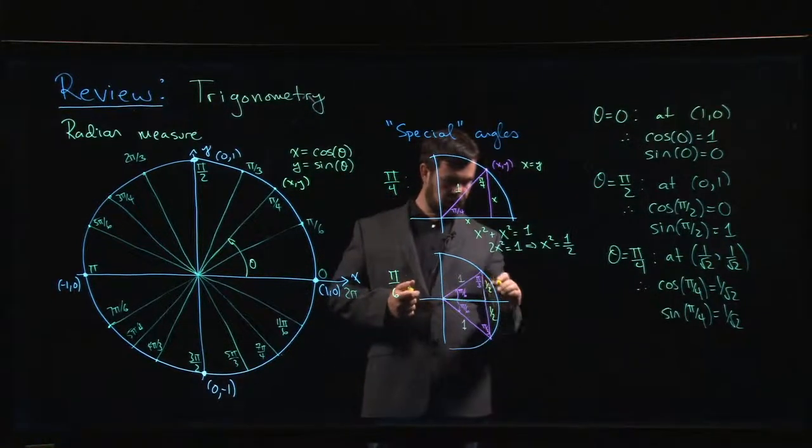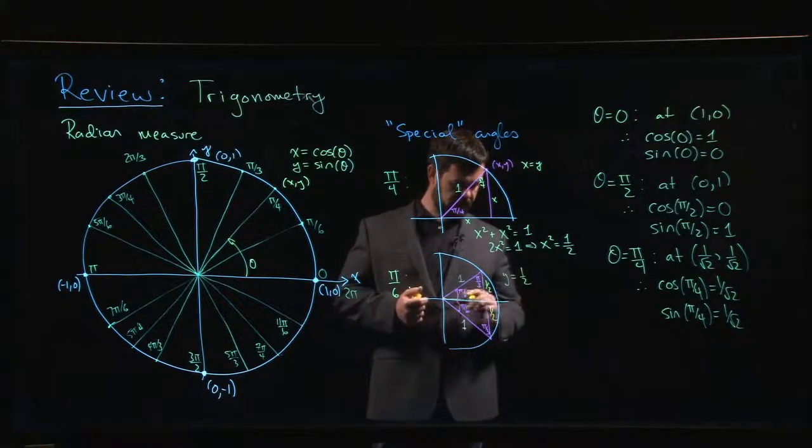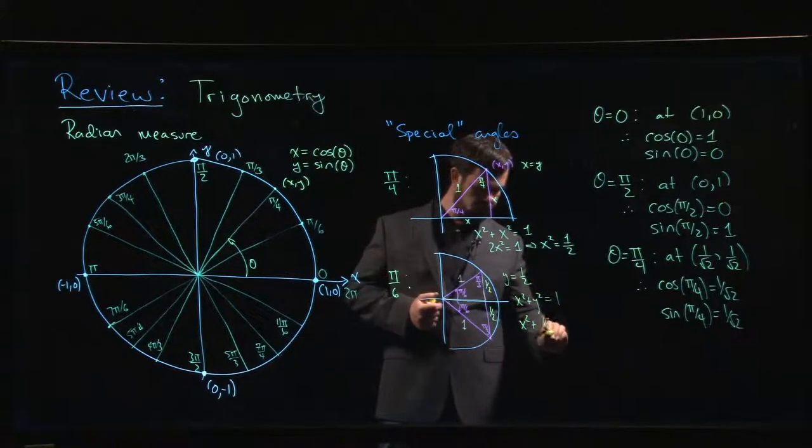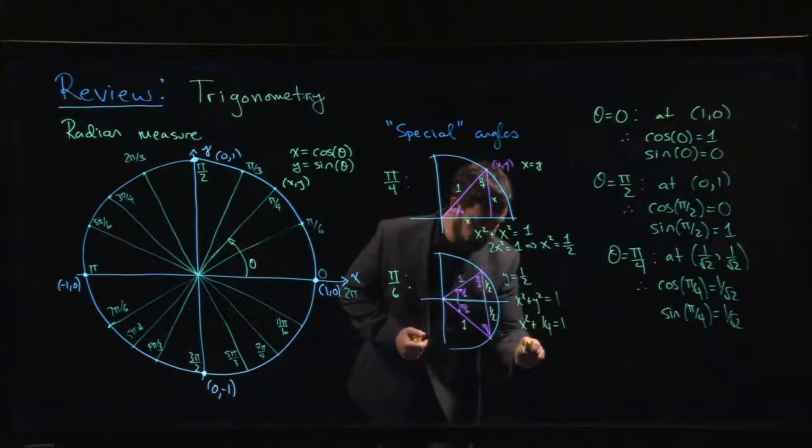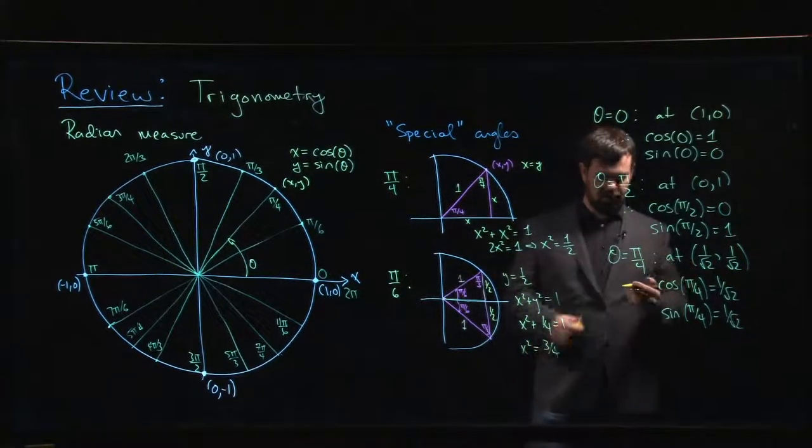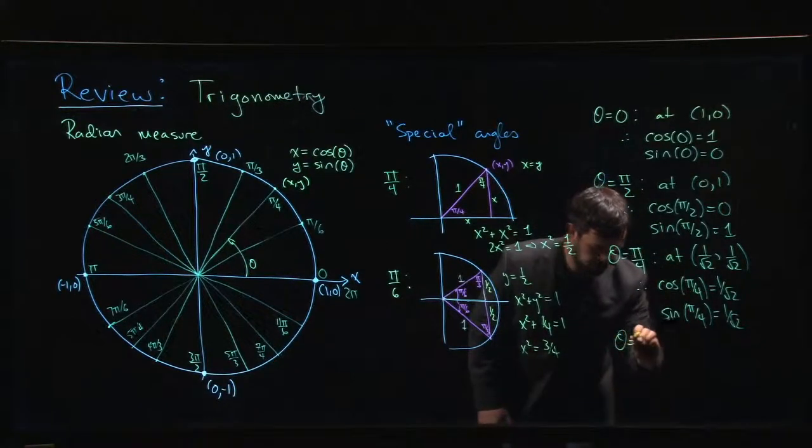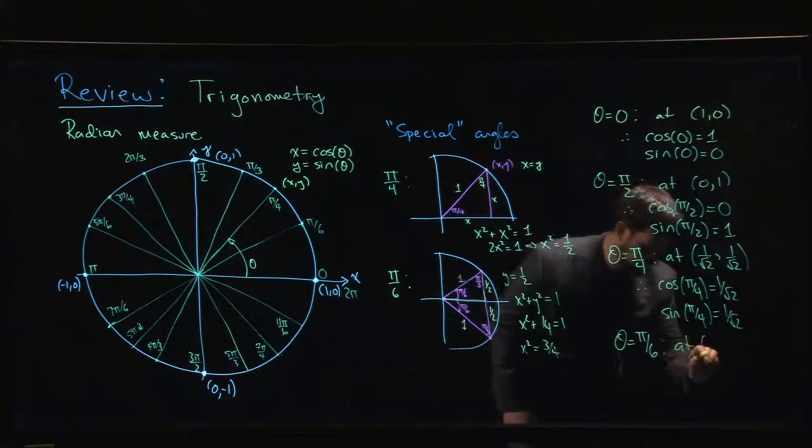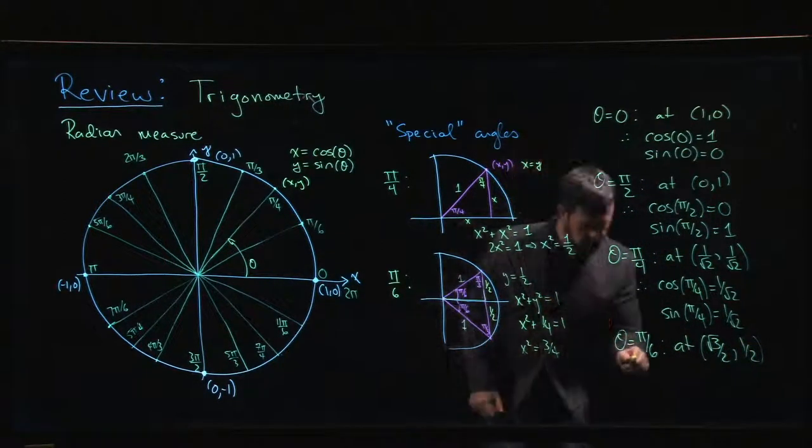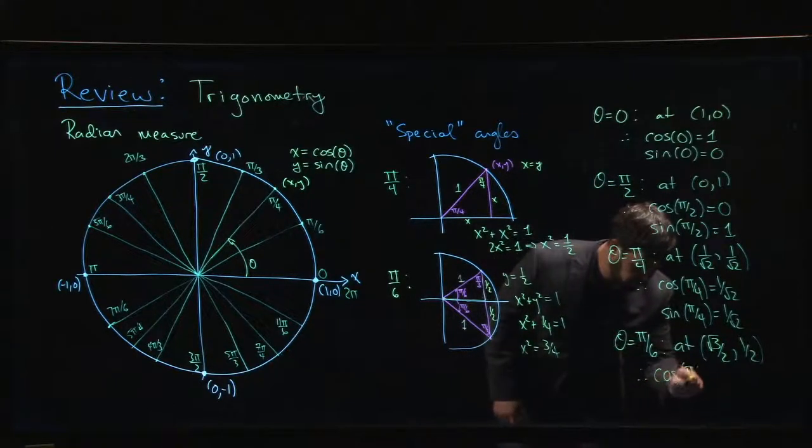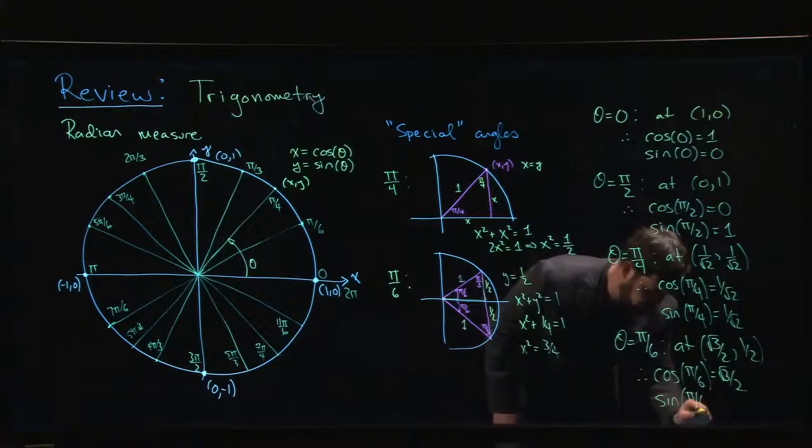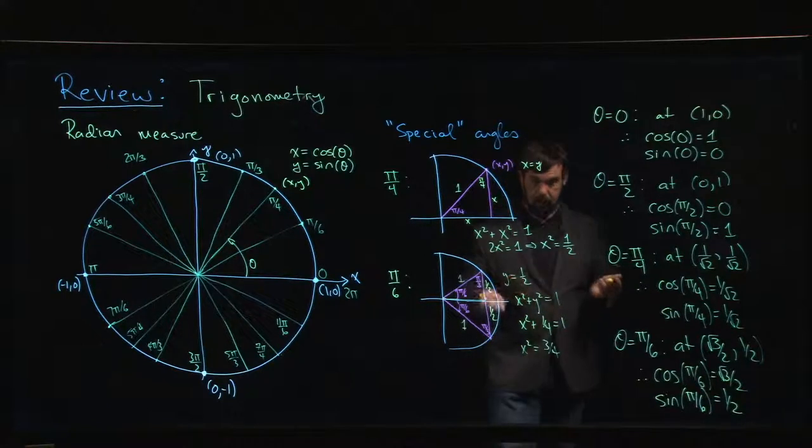So now I know that my y coordinate here is 1 half. And I know that x squared plus y squared has to equal 1. So x squared, squaring a half gives me a quarter equals 1. So x squared, if I subtract a quarter from both sides, x squared is 3 quarters. So to take the square root, you take the square root top and bottom. Pi over 6 is at coordinates x is root 3 over 2, y is 1 half. So that means that cos of pi over 6 is root 3 over 2. Sine of pi over 6 is 1 half.